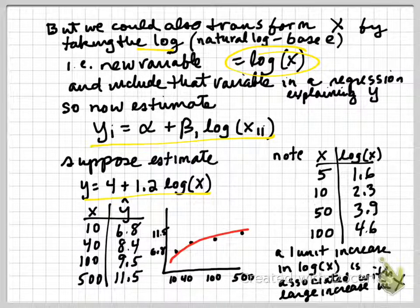And we might estimate that and we get some regression output like this, y equals 4 plus 1.2 times the log of x. Again, we might consider different values of x and plot them. So if x is equal to 10, then we take the log of x, we multiply it by 1.2, we add 4 to that, and we'll get 6.8.